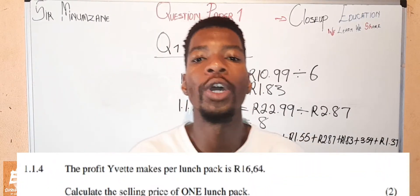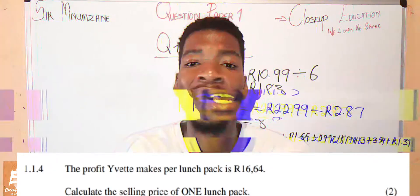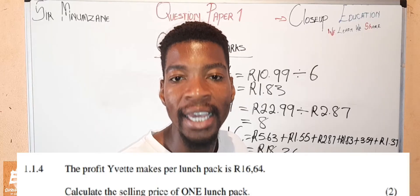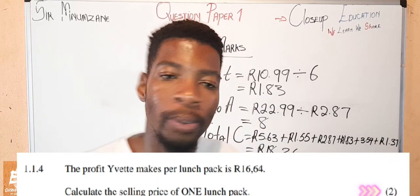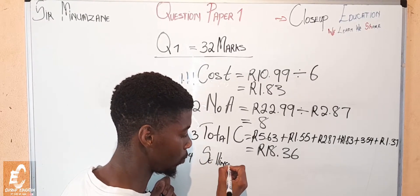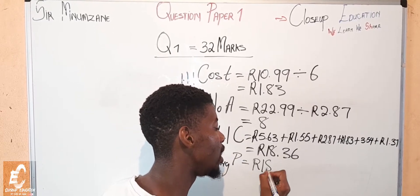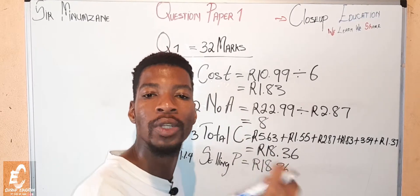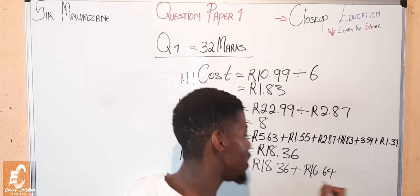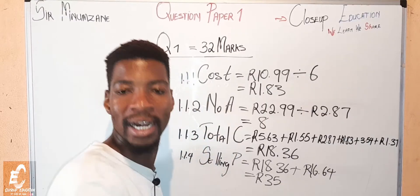Let's move to question 1.1.4. The question simply wants to know what is the selling price per lunch pack if the profit made is 16 rand comma 64 cents. Before we answer that, we look at our marks - how much are we getting? Two marks, meaning the answer is to be simple. So we are writing 1.1.4 and saying selling price equals to our total cost which is 18 rands comma 36 cents plus our total profit which is 16 rands comma 64 cents, and we are getting our selling price which is 35 rands.